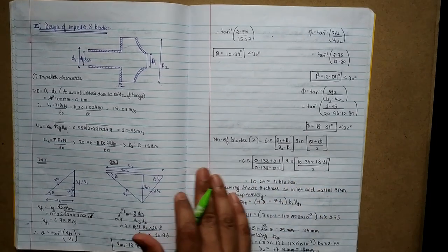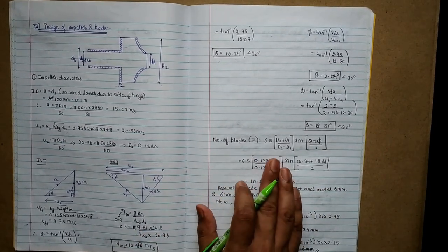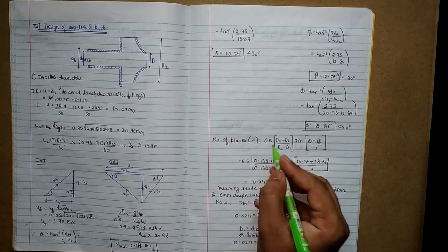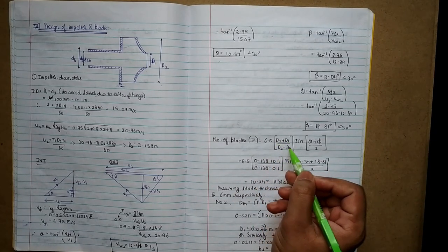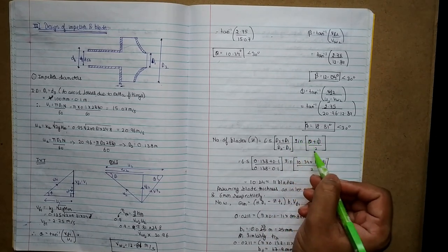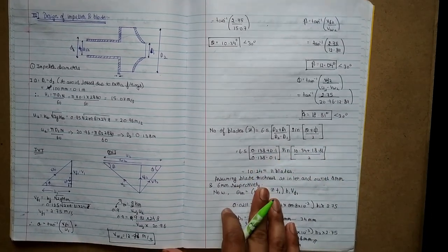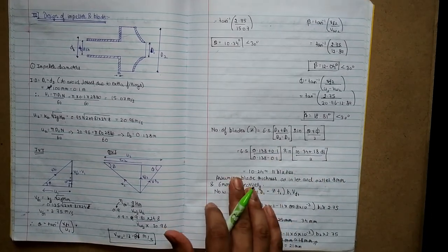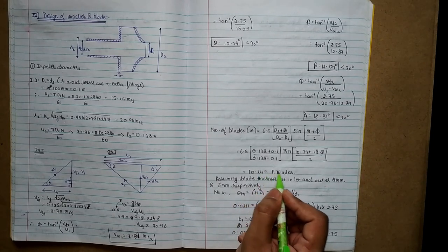After that we calculate the number of blades. The formula is 6.5·[(D2 + D1)/(D2 − D1)]·sin[(θ + φ)/2]. Putting all the required values we get the answer as 10.24, which we round off to 11 blades.